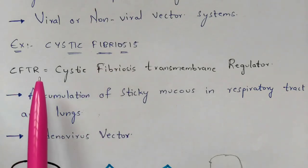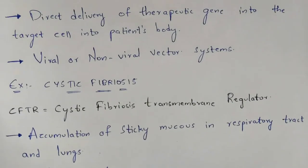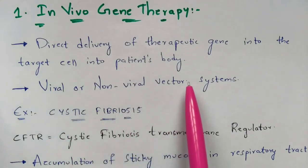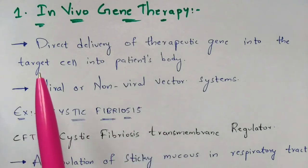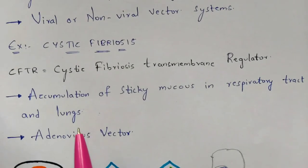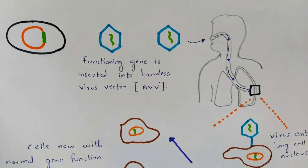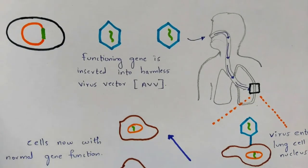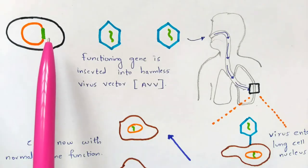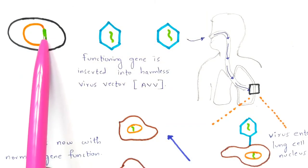To cure cystic fibrosis, the CFTR gene is inserted using an adenovirus vector. Vectors must be used in both in vivo and ex vivo gene therapy — without vectors, gene therapy cannot be done. First, we select a particular bacterium carrying a plasmid with the cloned normal human CFTR gene, shown here in green.